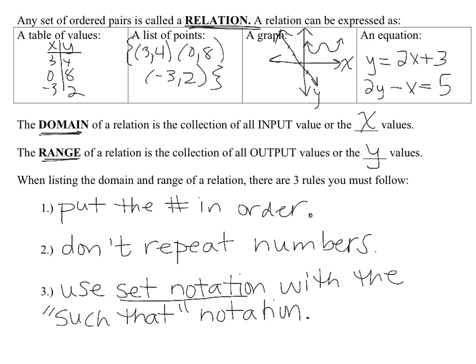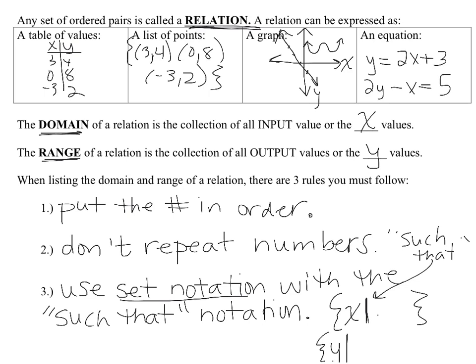I'm going to add to the set notation rule because we're going into a more advanced discussion of domain and range. You're going to use set notation with the 'such that' notation. For domain, you write x such that — and the 'such that' symbol is a straight vertical line. For range, you would start with y such that. What follows after that is whatever the domain or range values are.